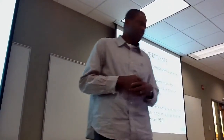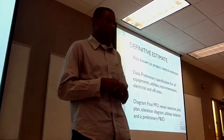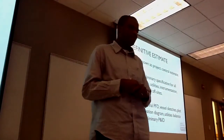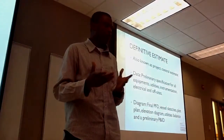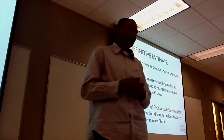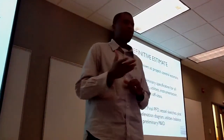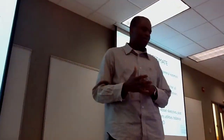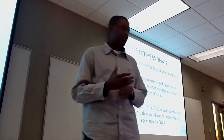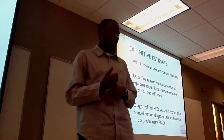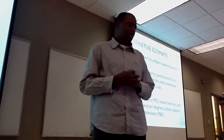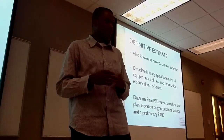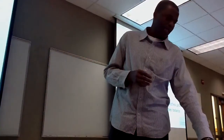The definitive estimate is also known as the project control estimate. The data required includes primary specifications for all equipment, utilities, instrumentation, electrical, and off-site. The diagrams required are the final process flow diagram, vessel sketches, the plant layout, elevation diagrams, utility balance, and the preliminary P&ID diagram.